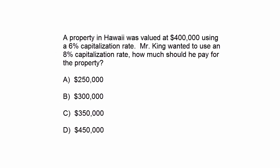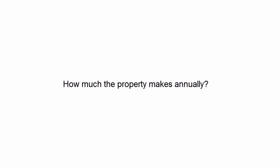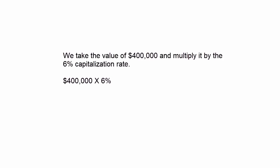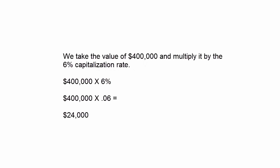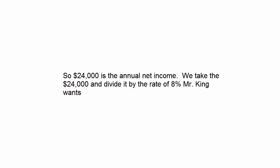Going back to the question, $400,000 is the value and we're using a 6% capitalization rate. What we need to do is figure out how much the property makes annually. We take the value of $400,000 and multiply it by the 6% capitalization rate — $400,000 times 0.06 gives you $24,000. So $24,000 is the annual net income.